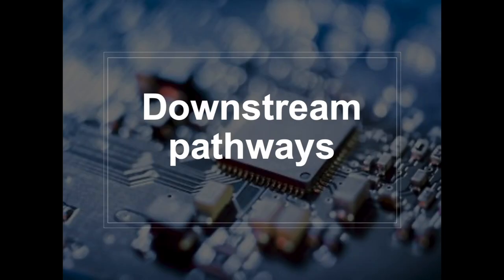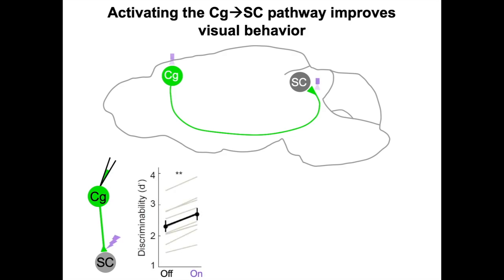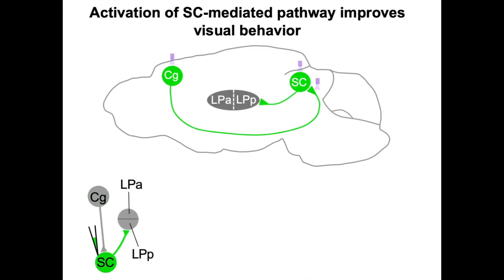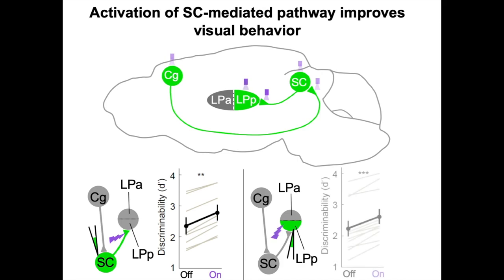Cortical pyramidal neurons often send axon collaterals to multiple brain regions. So what are the downstream pathways underlying this effect? Activation of Cg axons in the SC improved task performance. Activating SC neurons in deep layers also improves performance. An important projection target of Cg neurons is the LP. The mouse LP is the homolog of the primate pulvinar. Activation of SC axons in the LP improves performance, and activation of LP neurons also improves performance.